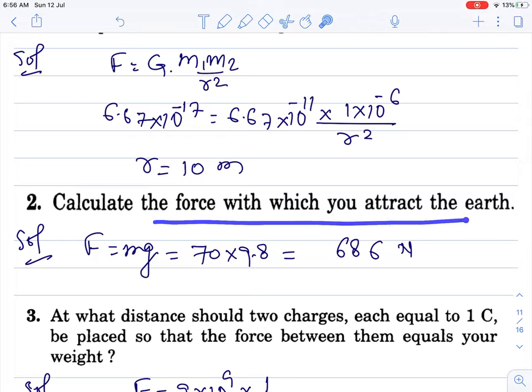Calculate the force with which you attract the earth. It is equal to the force by which earth attracts me. F equals mg. I took my mass as 70, g value as 9.8, this much Newton it comes.